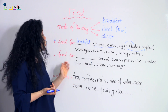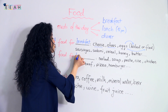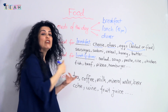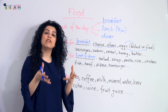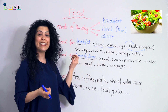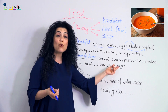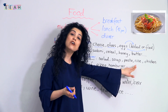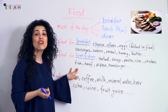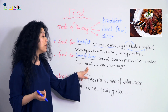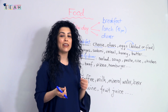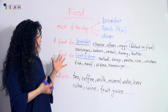Today we're focusing on these words. What about the next meal — lunch? What do we have for lunch and dinner? You can have similar things for both. Let's start with healthy food: salad. You can have soup, pasta, rice, chicken — yummy! — fish, beef, pizza, or hamburger. You can also have many other things.